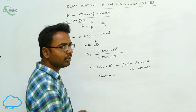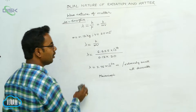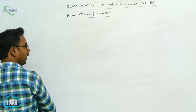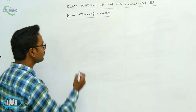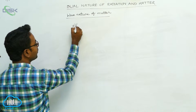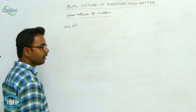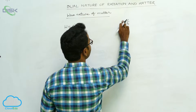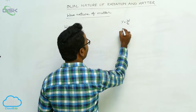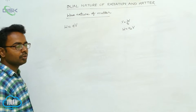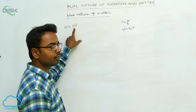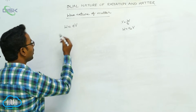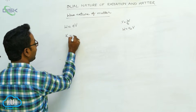Now we find the De Broglie wavelength for an electron accelerated through a potential difference V. Suppose an electron is accelerated through a potential difference V; then work done on it is W = eV. From electrostatics, work done equals charge into potential difference. This work done is given as kinetic energy to the electron, so kinetic energy of the electron K = eV.